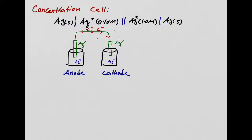All right class, last part of electrochemistry. I want to talk about concentration cells. Look at this cell — the oxidation and the reduction involve exactly the same metal. Both half cells have the same components. So what is the driving force to transfer electrons from anode to cathode if everything is exactly the same?